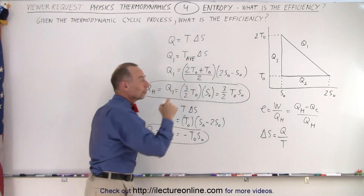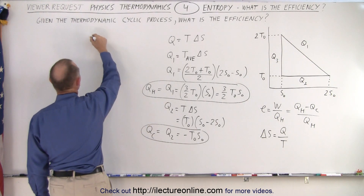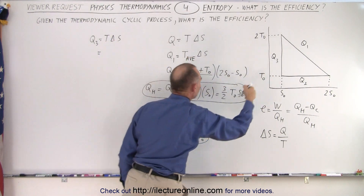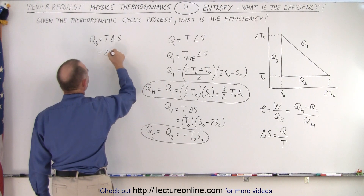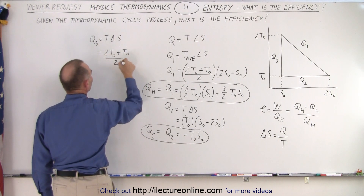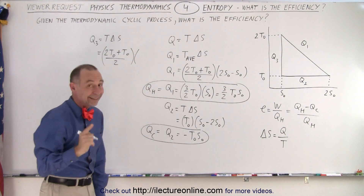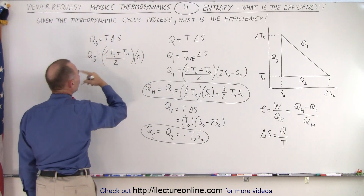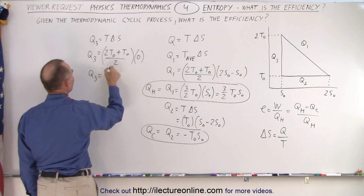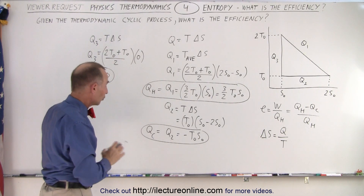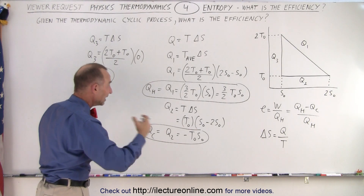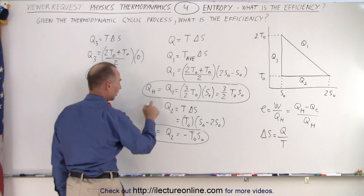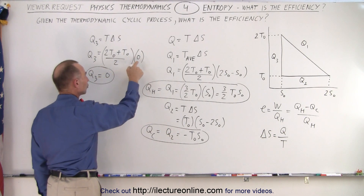Now we have one more: Q3. Q3 equals the temperature times the change in entropy. The temperature would again be the average — 2T sub-naught plus T sub-naught divided by 2. But notice delta S in this case is going to be zero; there's no change in entropy. Therefore Q3 must equal zero. So only Q1 and Q2 represent heat exchange — Q1 is heat added to the gas, Q2 is heat taken away. Q3 is zero because there's no change in entropy.